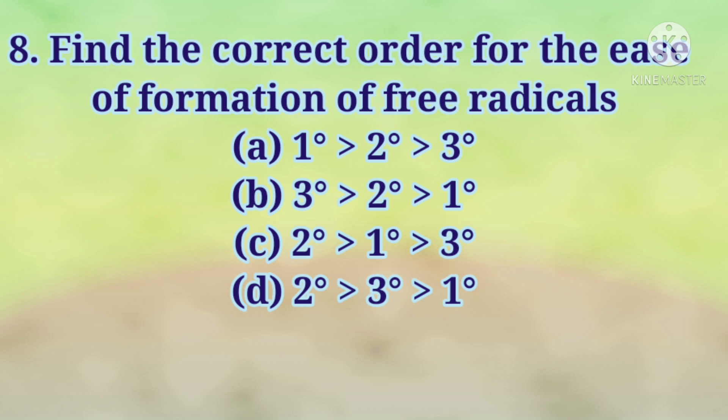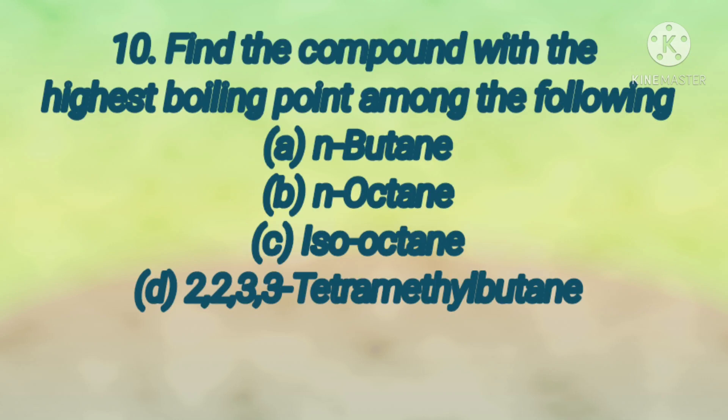Number eight: find the correct order for the ease of formation of free radicals. Answer is B — tertiary, secondary, then primary. Find the compound with the highest boiling point among the following: answer is B — n-octane.